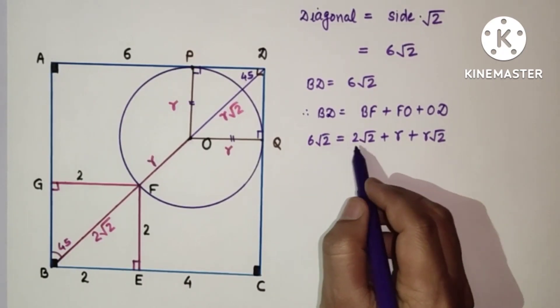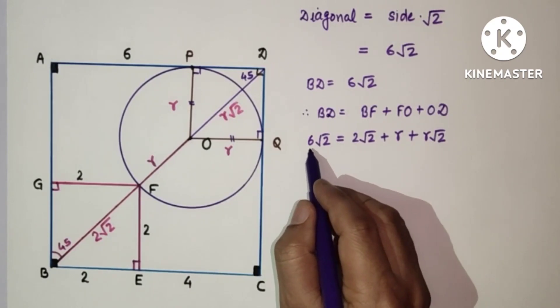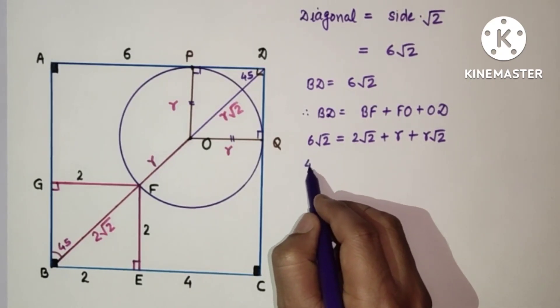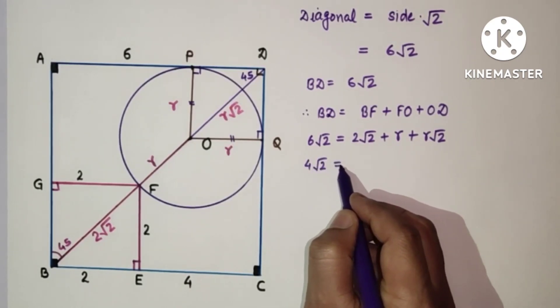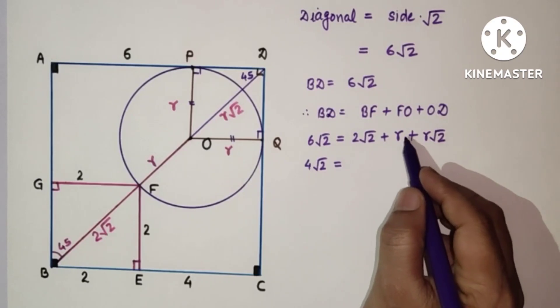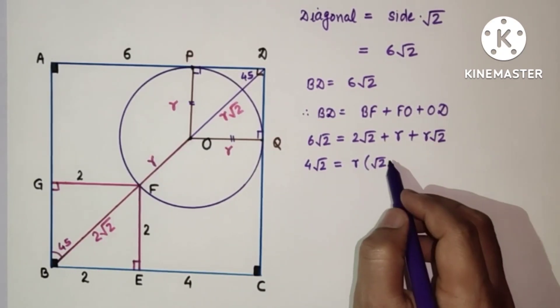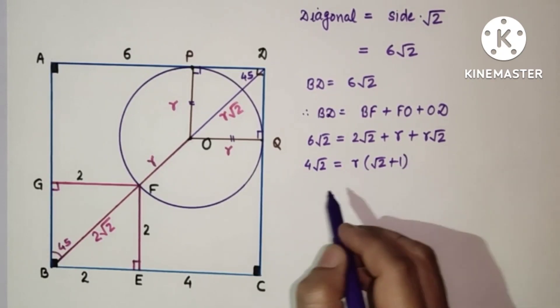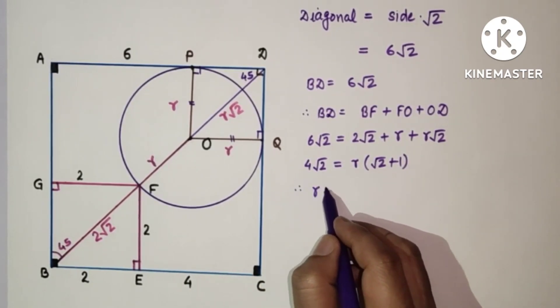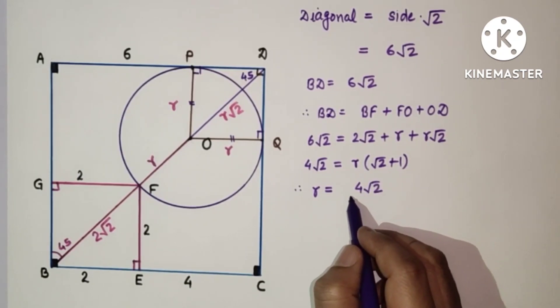If we take in left hand side, this 2 root 2 will be subtracted. So 6 root 2 minus 2 root 2 is 4 root 2. 4 root 2 is equal to, if in this R root 2 and R, if we take R common, then root 2 plus 1. 1 plus root 2 or root 2 plus 1, same thing. So therefore R is equal to 4 root 2 upon root 2 plus 1.